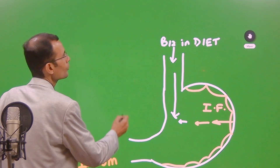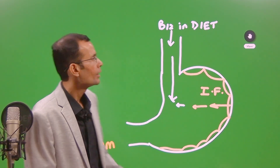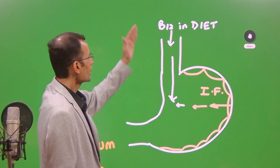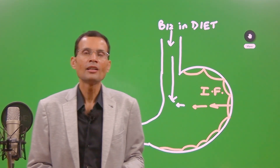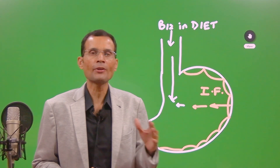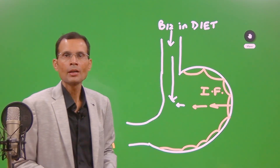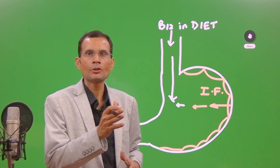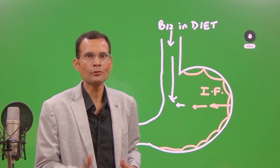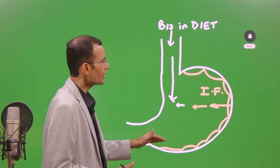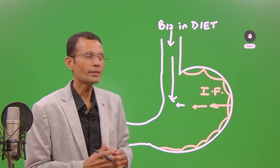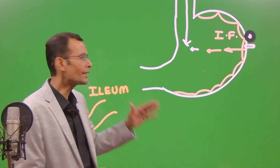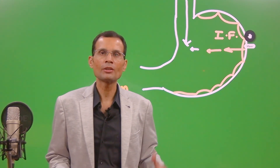Vitamin B12 is in the diet — sometimes called the extrinsic factor of Castle. When we consume it, it goes into the stomach, where the parietal cells of the stomach lining secrete two things: HCl and the intrinsic factor of Castle. Our B12 from the diet will bind with the intrinsic factor of Castle, and this vitamin B12–intrinsic factor complex will travel all the way to the ileum, from where B12 will be absorbed.